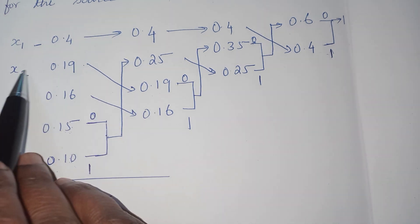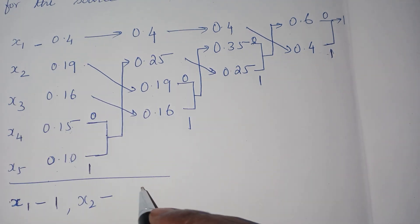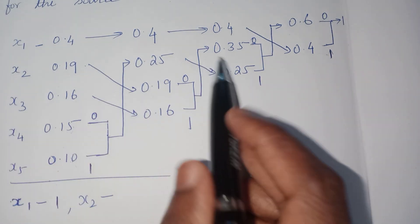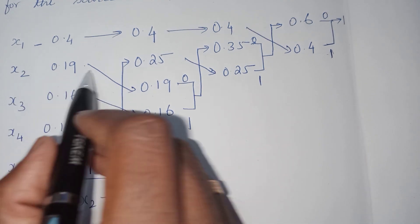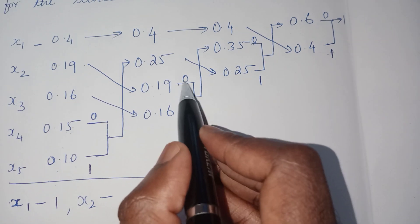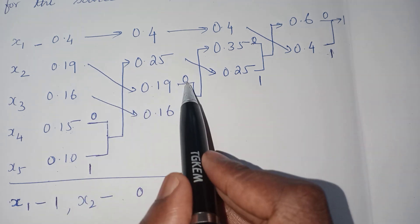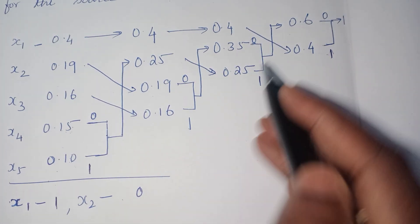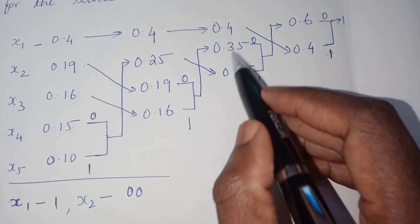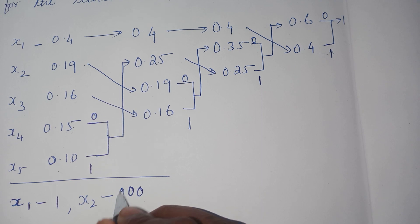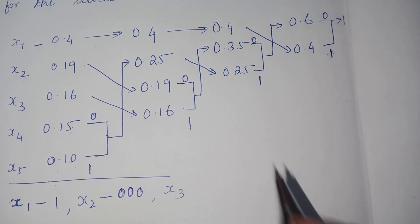For x2, follow the branches. Remember: you must write the branch weights from right to left — not left to right. Tracking x2, the first branch is 0, then 0, then 0. So the code for x2 is 000.